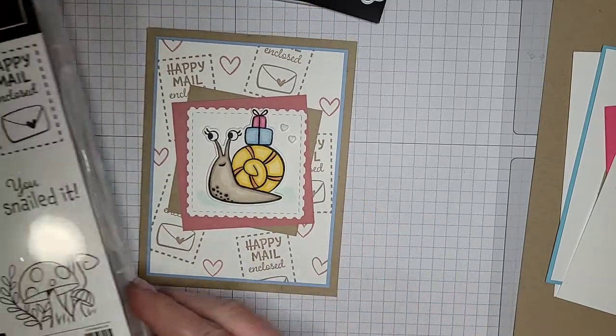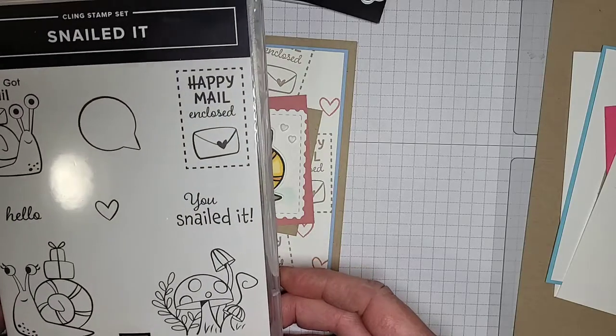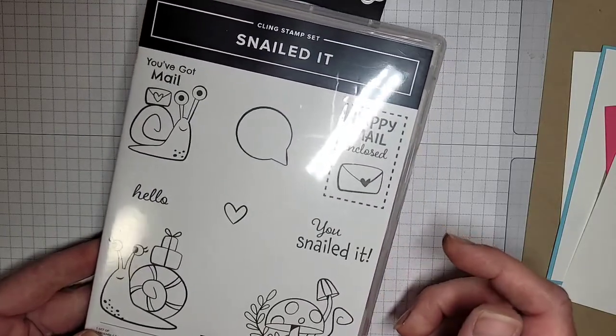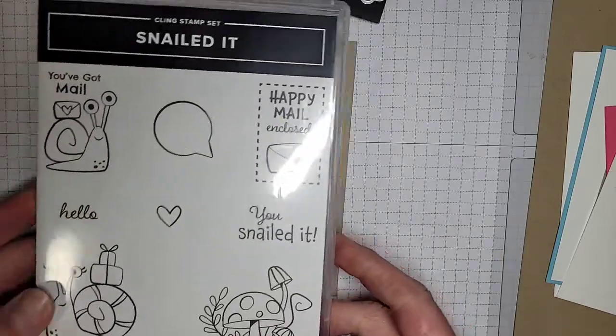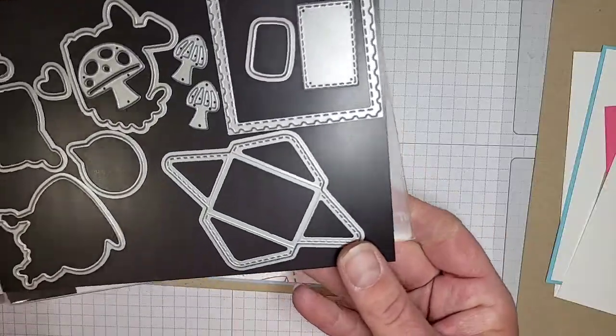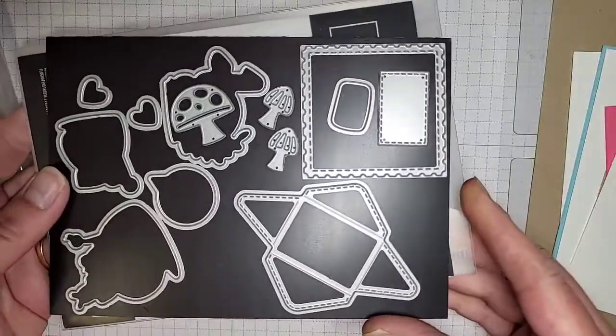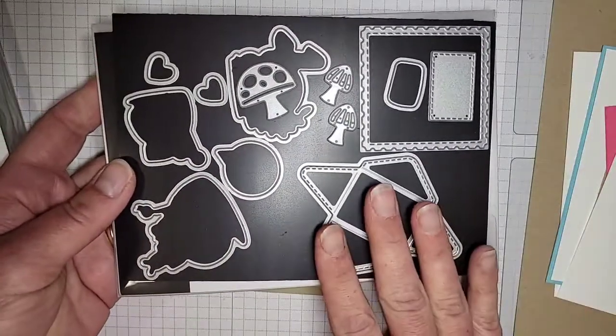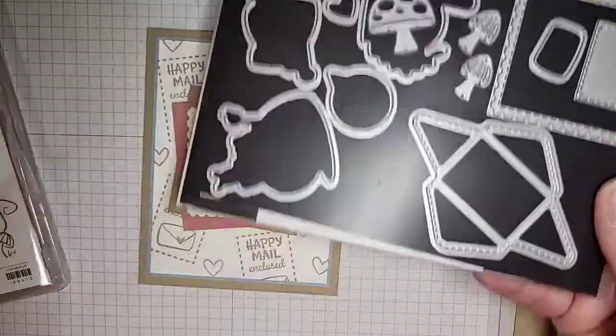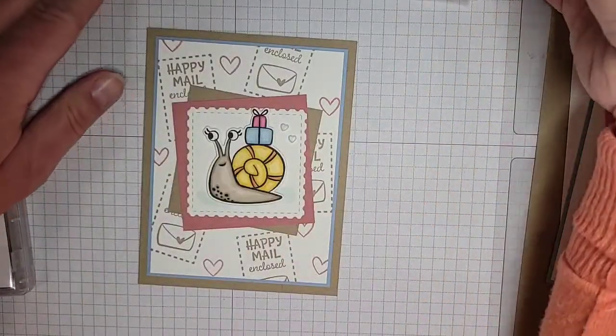This card features Snailed It, one of the super adorable stamp sets that's retiring from the January to June mini catalog. This stamp set comes with coordinating dies. These dies are on for 50% off, so regular $41, they're on sale for $20.50 while supplies last. If you fall in love with this Snailed It bundle, now is a perfect time to add it to your collection.